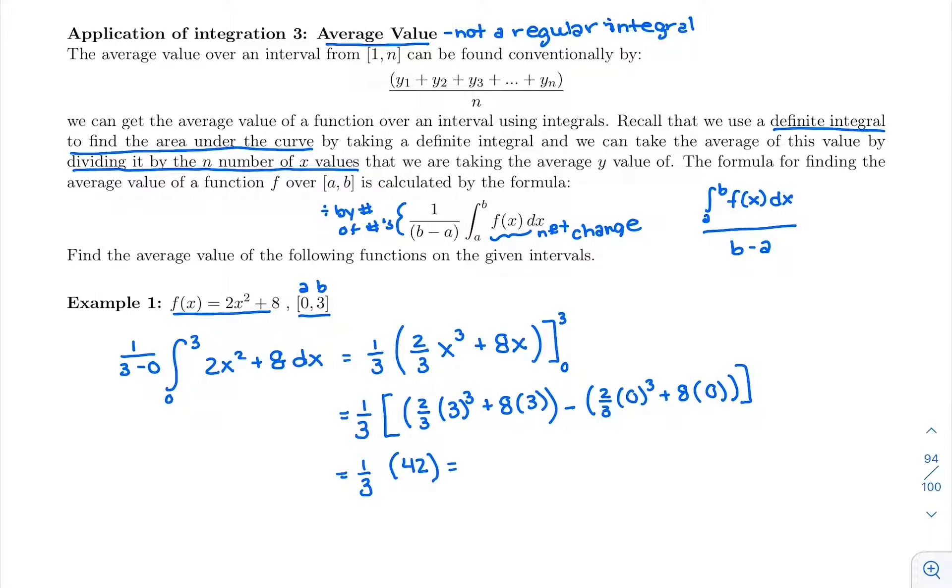So our average value, the total sum found by doing the antiderivative and plugging into that definite integral gave us 42. And then we divide it by the number of numbers, 3, or multiply it by one third. Our average value is 14.